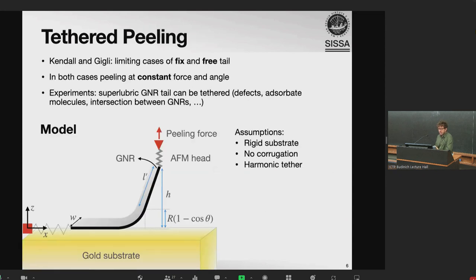So the Kendall and Gilly limits are the limiting cases of a fixed and a free tail during this peeling. And in both cases, the peeling occurs at constant force and angle. But an intriguing third situation that might be relevant for experiments is when the superlubric ribbon is actually tethered by the tail by some defect, like a step edge in the metal surface, some adsorbates, or intersection with other ribbons. So in this case, we can introduce this new regime in the model and see what we get. One would expect some rather trivial behavior with some force and angle in between the cases. But I should show you in a second that that is not the case. And somewhat more rich, critical phenomena, of course, when this new constraint is introduced in the system.